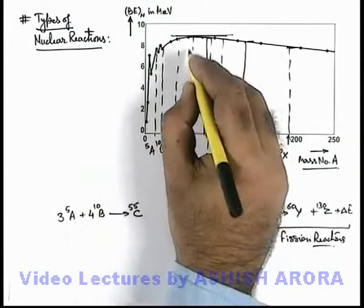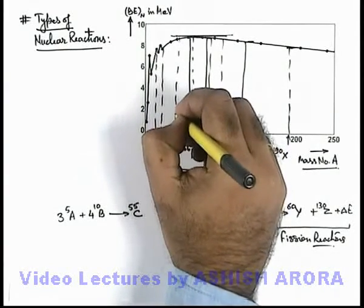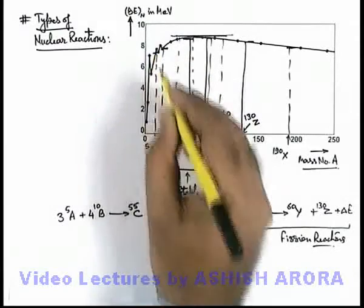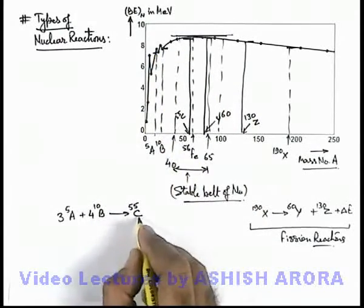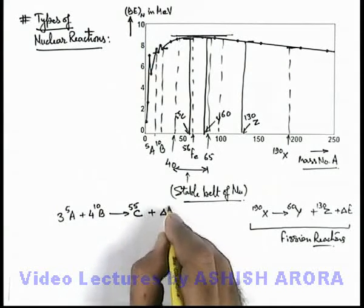So we can see C will lie somewhere here. So in this situation, if this is C55, which will be having binding energy per nucleon higher than A and B, so again we can see C would be more stable compared to A and B, and in that situation again some energy will be released.